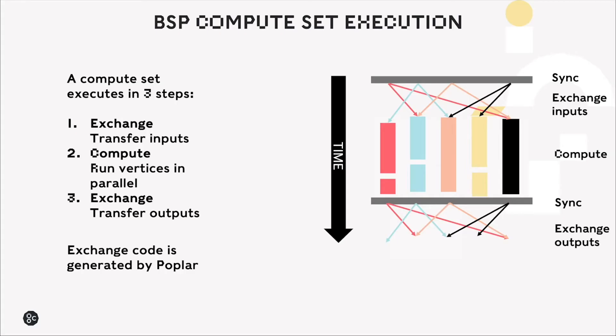In terms of BSP compute set execution on the IPU, this runs in three steps. First we have an exchange phase where inputs are transferred from different tiles on the IPU to the tile where the vertex is going to run.